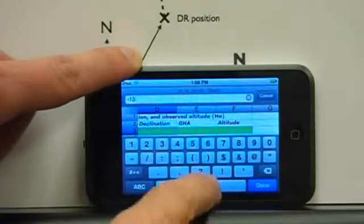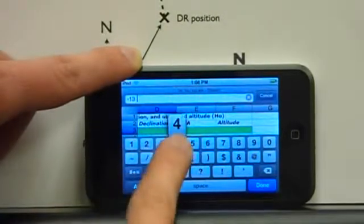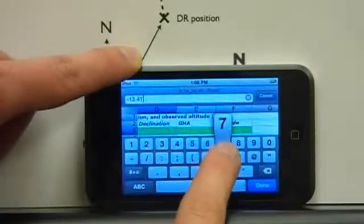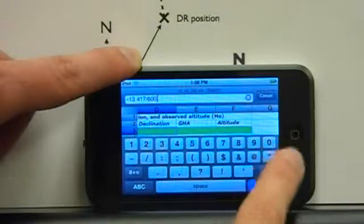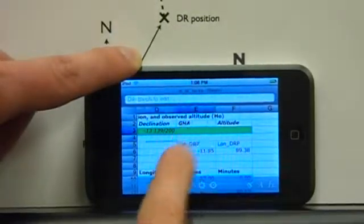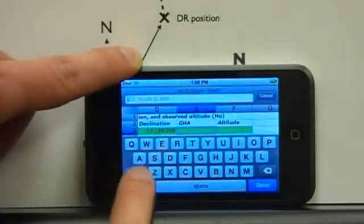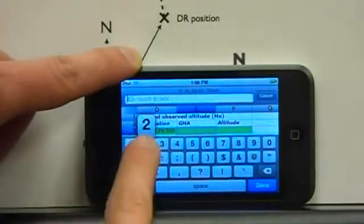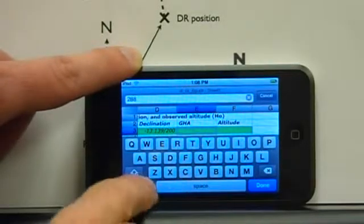The Greenwich hour angle is 288 degrees and 48.8 minutes.